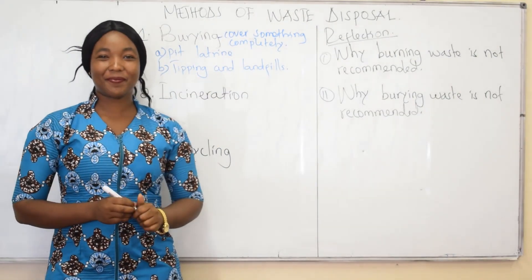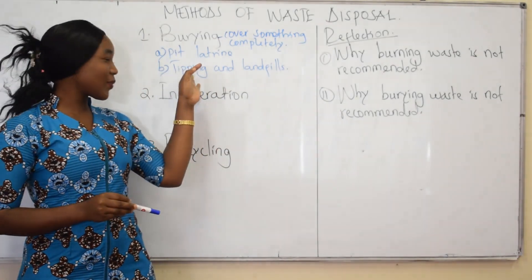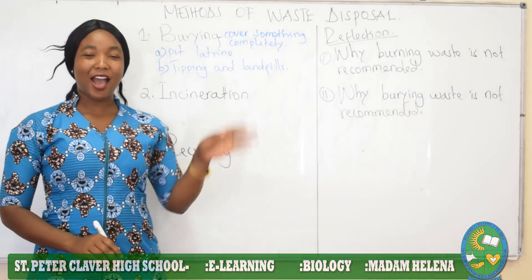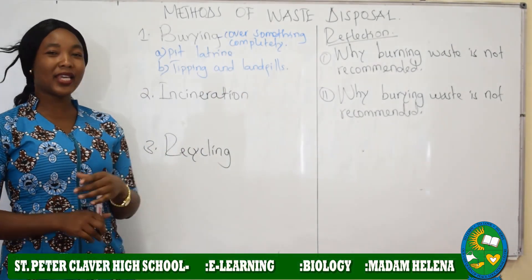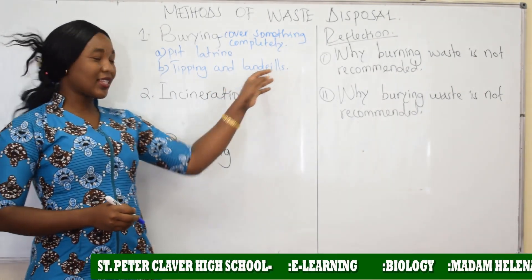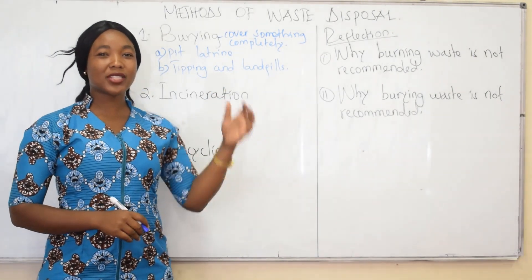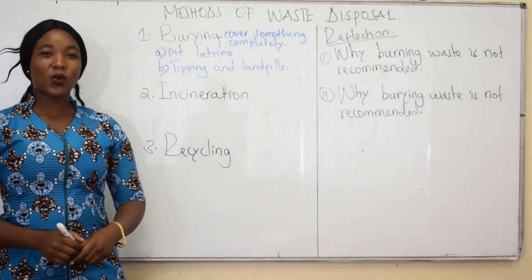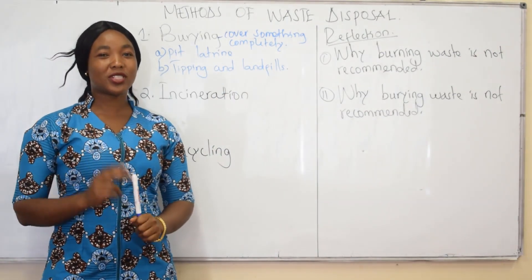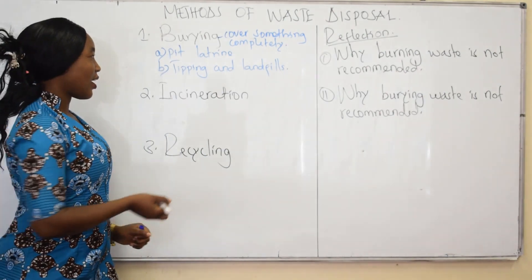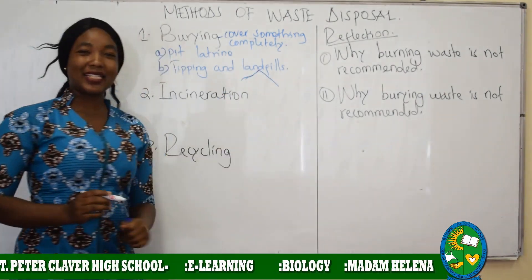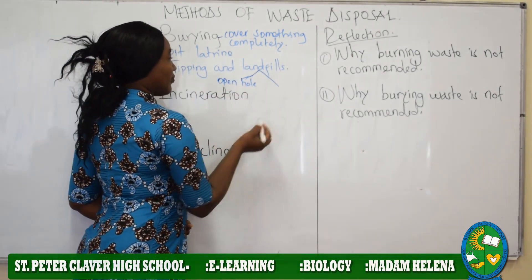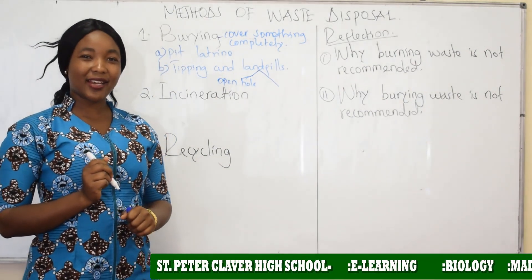In tipi and landfills — starting with the tipi, this is the collection of waste in the dustbin. After collecting the waste in the dustbin, it is going to be dumped. Landfill is the place or area where that waste from the dustbin is going to be dumped. In landfills, we have two categories: the first one is called open-hole landfill and the second one is called sanitary landfill.